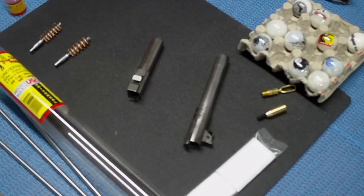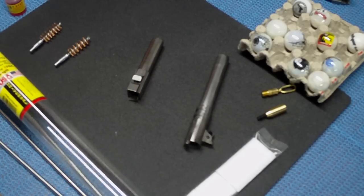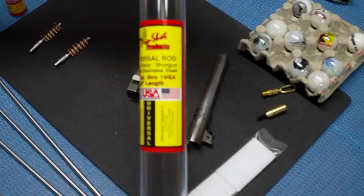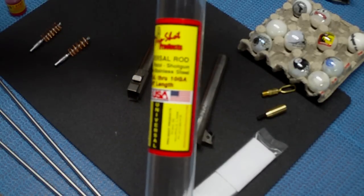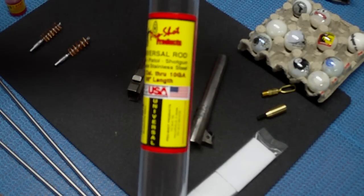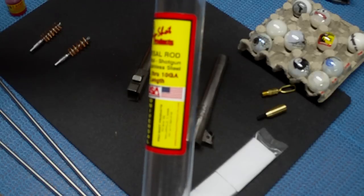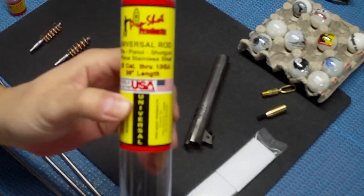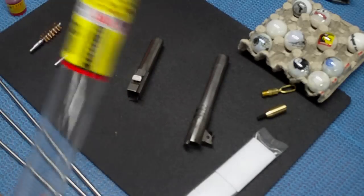All right, Andrews, what's up? So we're going to do the review on the ProShot products universal cleaning rod for rifle, pistol, shotguns, three-piece 22 caliber through 10 gauge and it's 36 inches long and it is proudly made in the USA.